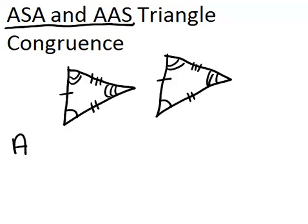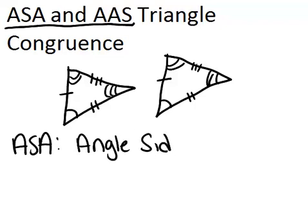So ASA stands for Angle Side Angle. And what it means is, if you have two pairs of angles that are congruent and the side in between them is also congruent, then the triangles will be congruent.